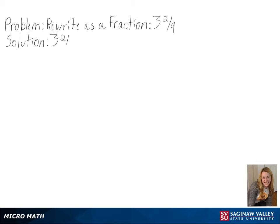Our problem is to rewrite the mixed number as a fraction. Another way of writing 3 and 2 over 9 is 3 plus 2 over 9. To get a common denominator, we can multiply 3 by 9 over 9, since that is equal to 1.